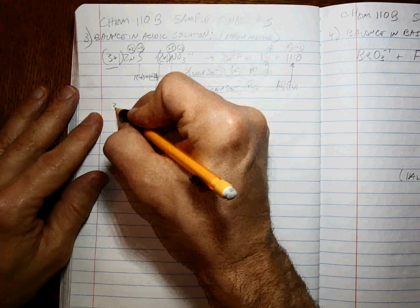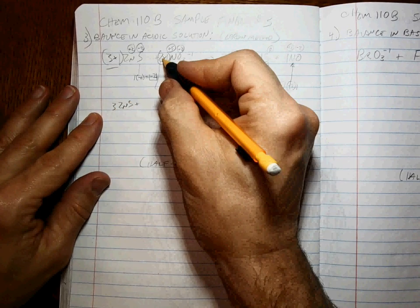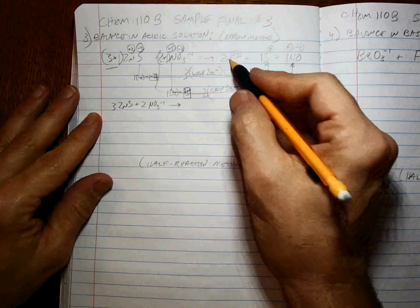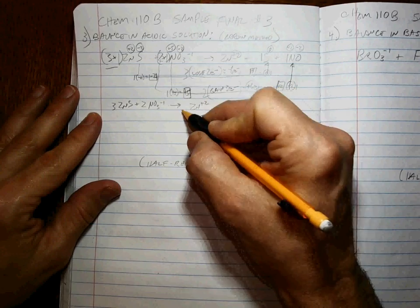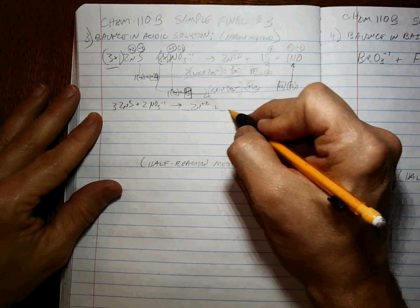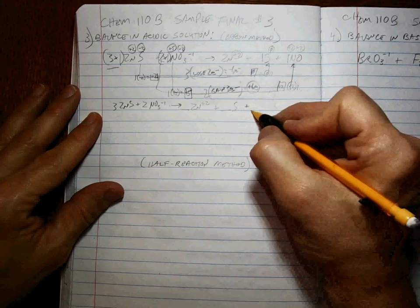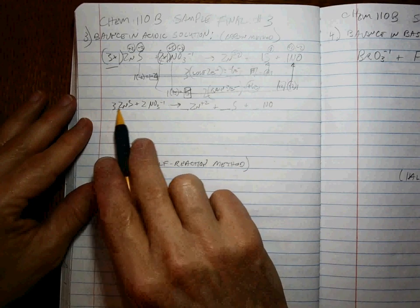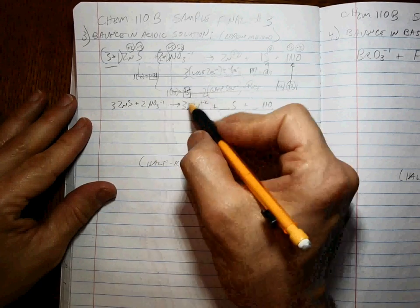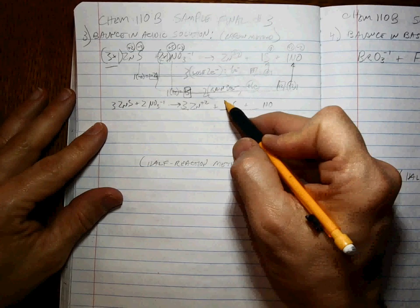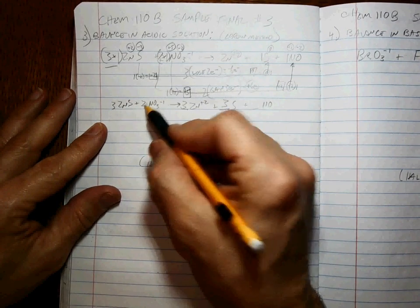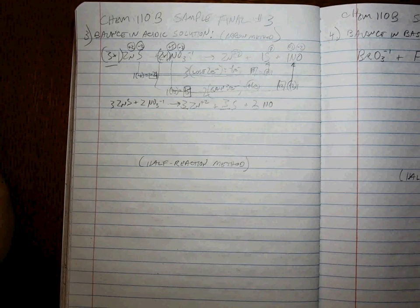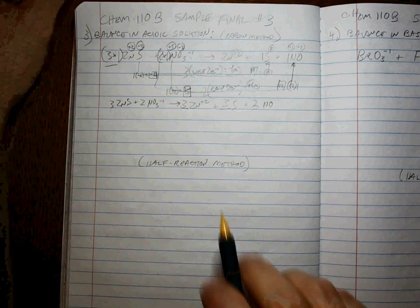Okay, we're done with the oxidation numbers. What we are left with is 3 ZnS's plus 2 NO3^- goes to Zn^2+, not sure how many S's and not sure how many NO's, no charges on those. Okay, now we balance by inspection. Three zinc, three zinc, that has to be a three. Three sulfurs, that has to be a three. Two nitrogens, so that's two nitrogens. Okay, good.